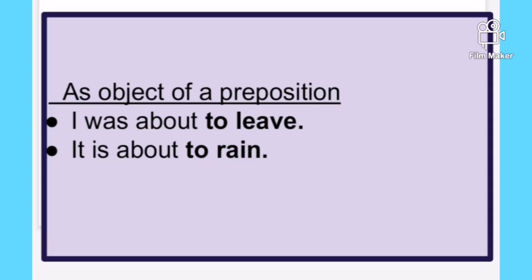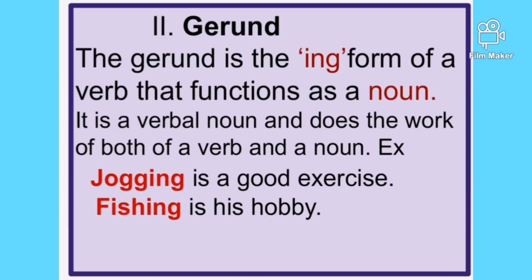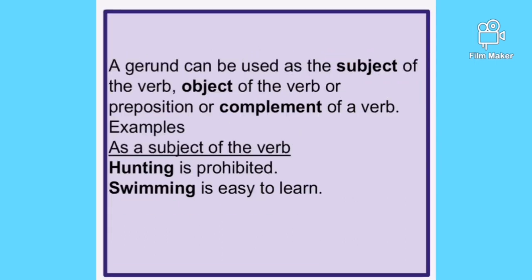Next, the second kind of non-finite verb: the gerund. The gerund is the 'ing' form of a verb that functions as a noun. It is called a verbal noun because it does the work of both a verb and a noun. For example: 'Jogging is a good exercise,' 'Fishing is his hobby' — jogging and fishing are verbs used as nouns. As a gerund functions as a noun, it can be the subject of the verb, the object of the verb or preposition, or the complement of a verb.